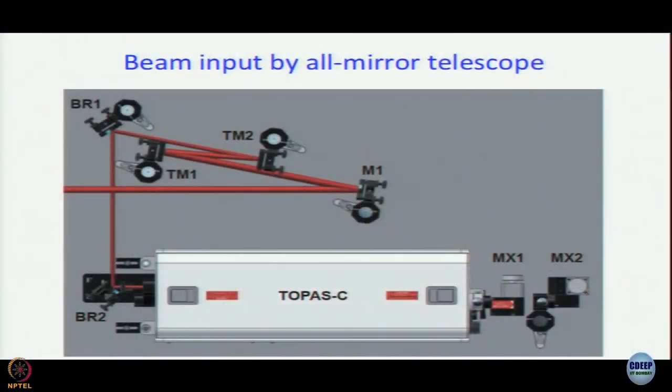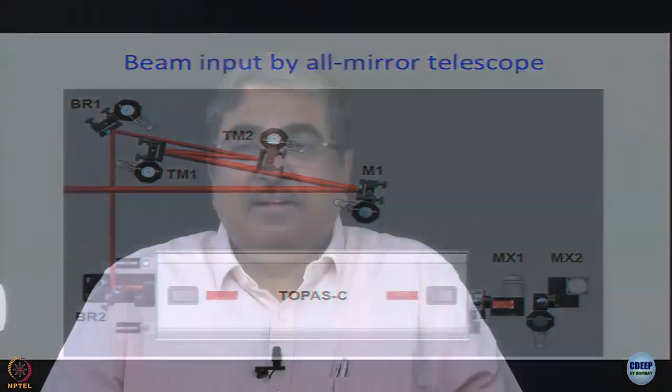So 1.3 millijoule of energy is fed into Topaz and the way it goes in is by this all mirror telescope. When I deal with femtosecond pulses, what is the preferred optics that I want to use - lenses or mirrors? Should I use lens or should I use concave mirror? Mirror, why? Because when femtosecond pulse passes through any medium, especially solid medium, then it broadens, the sharpness is broadened. Feeding of the beam is by an all mirror telescope understandably. Later on we do use lenses and we use lenses for a reason.